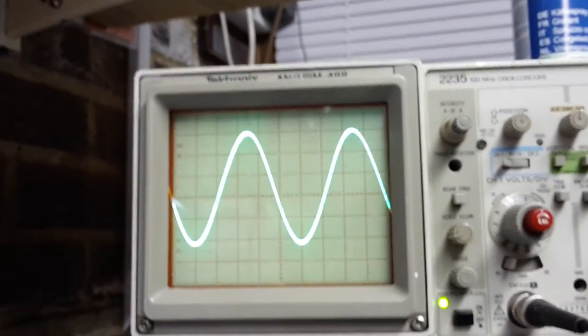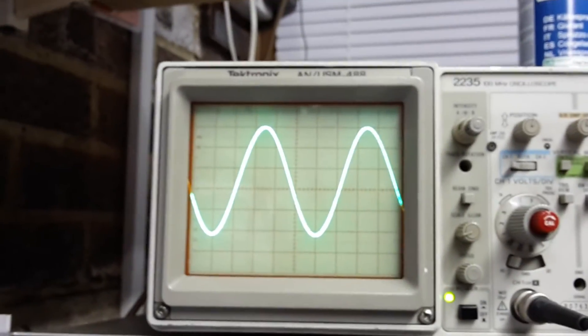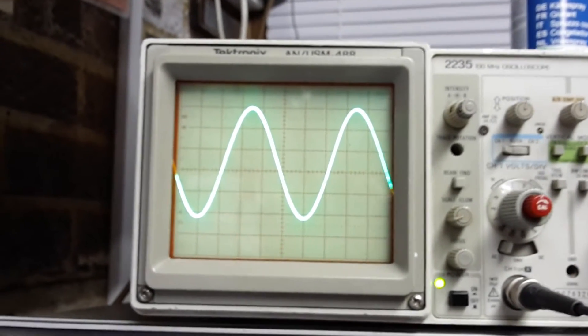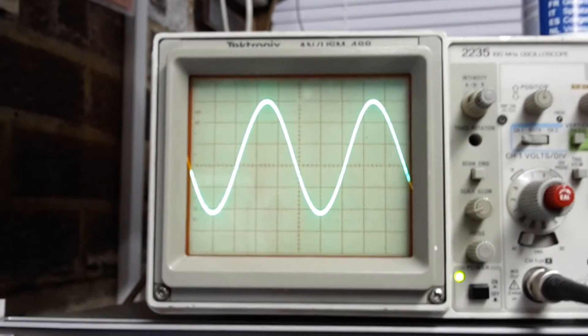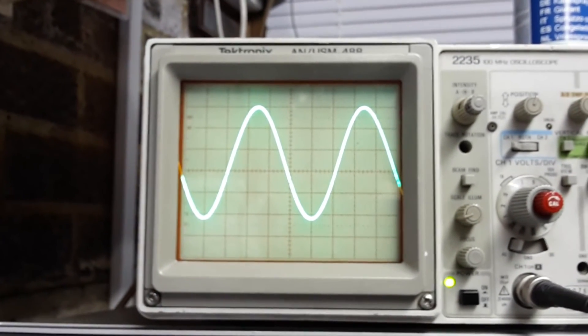So basically what it is, is it's a compression limiter on the front end that stops the amplifier getting close to its limit of headroom. So it does work.